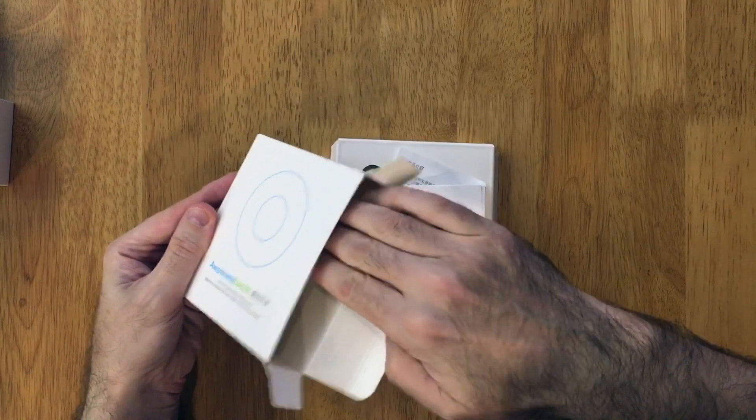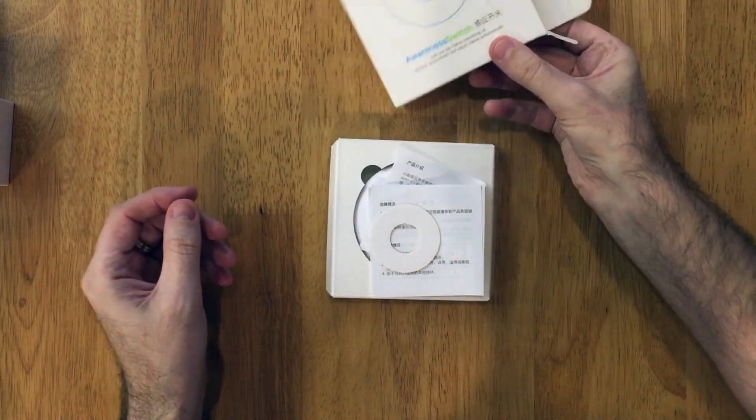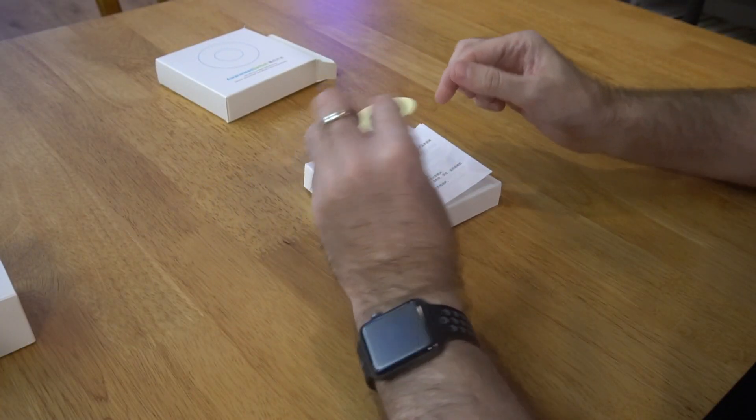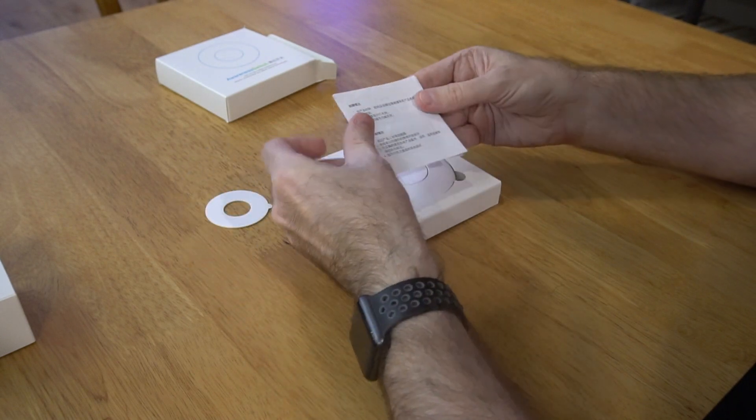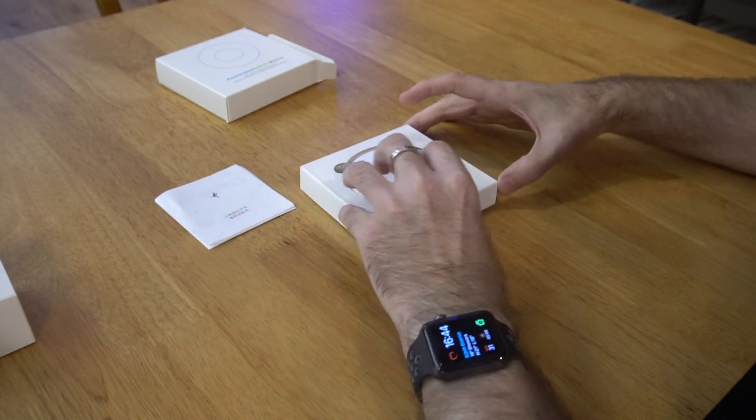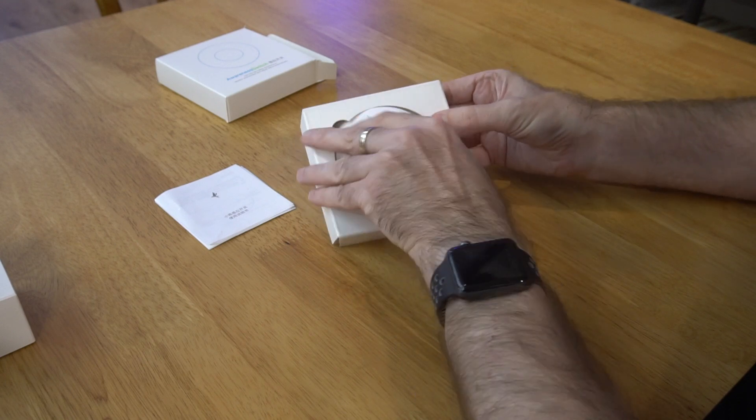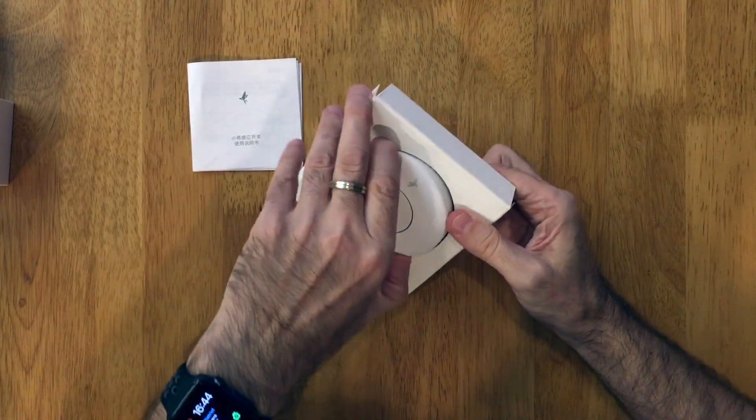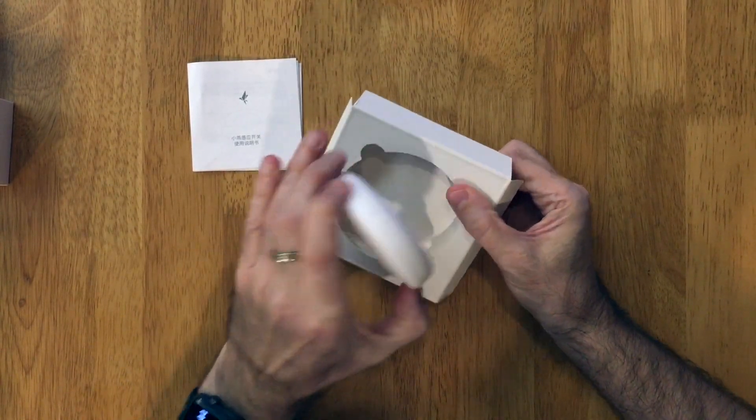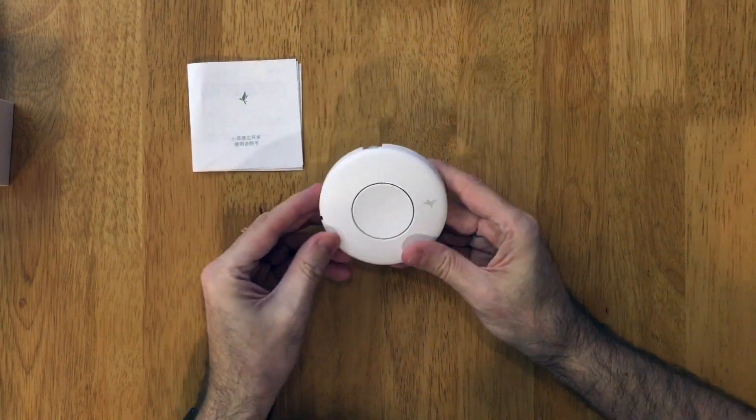Examining the contents of the box, you get your instruction manuals, the device, and a spare sticker if you want to stick it to the side of a wall, although you could just place this on a coffee table. The device itself feels quite heavy, so it's got a bit of weight to it, and it's 88 millimeters squared by 23 millimeters high.